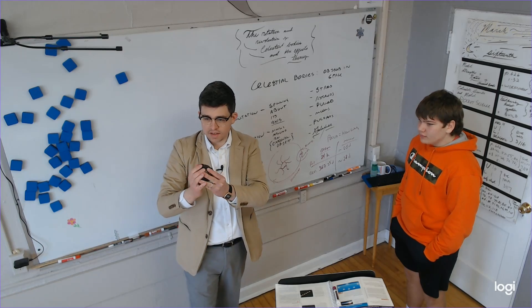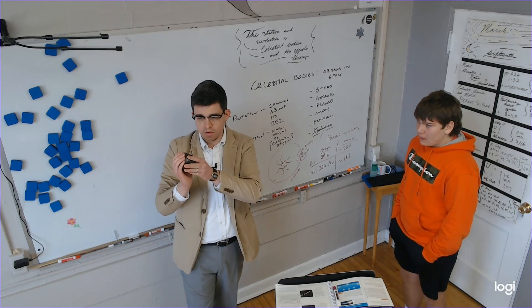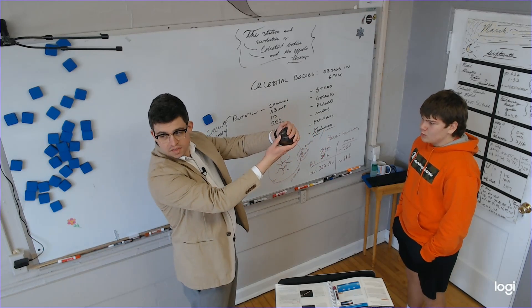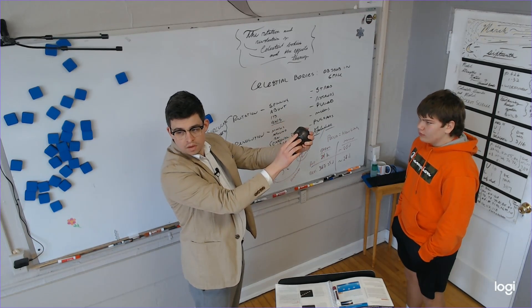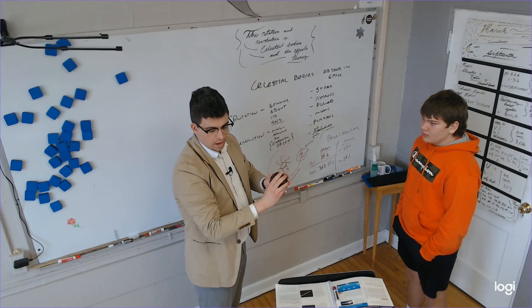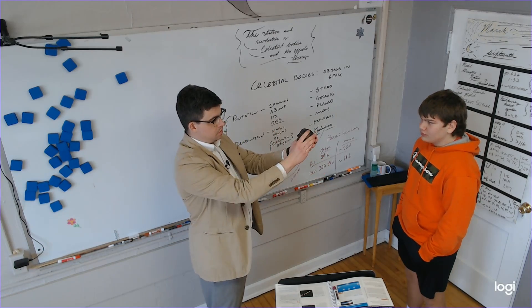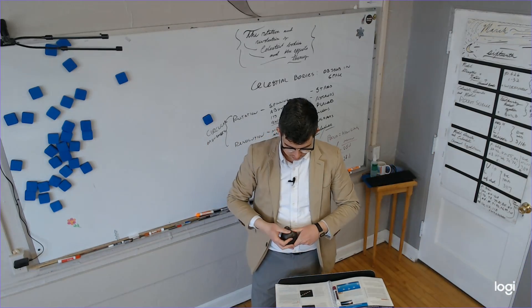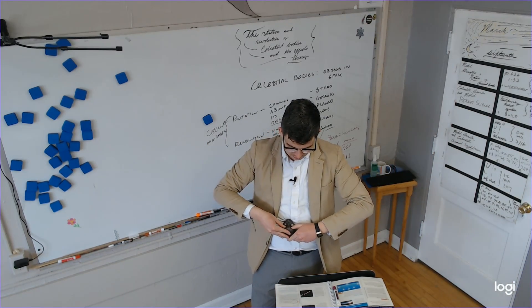So that's why the moon always looks the same to us every night, is because the same face is always facing us. The moon itself rotates. Does this side of the moon ever get sunlight? Be very careful. We call it the dark side of the moon. Does it ever get sunlight? Yeah, when it's facing this way it's getting full sun. What do we call this phase of the moon? New moon.